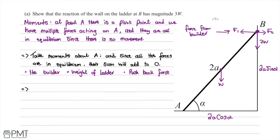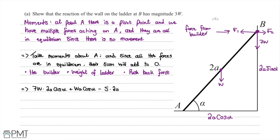Writing out the moment equation: the weight of the builder gives 7w multiplied by 2a cos(alpha). The weight of the ladder acts at the midpoint, giving w times a cos(alpha), since 2a/2 = a. The reaction force from the wall S acts perpendicular to it, giving S multiplied by 2a sin(alpha). All of these sum to zero.